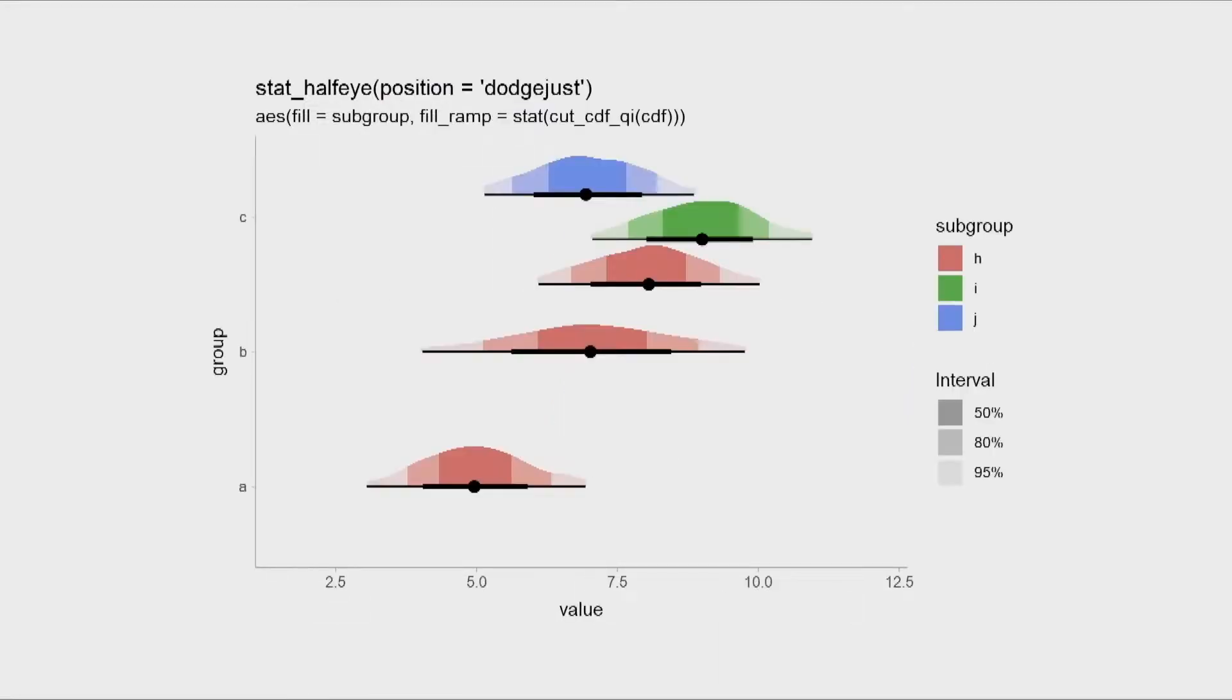Speaking of subdividing the slab, here we're actually using the CDF function, essentially bending the CDF in order to show 50, 80, and 95% intervals on the color of the slab. So this is a nice example of using the PDF and the CDF functions together in order to construct a geometry that would be difficult to do if you weren't able to use both of them simultaneously.